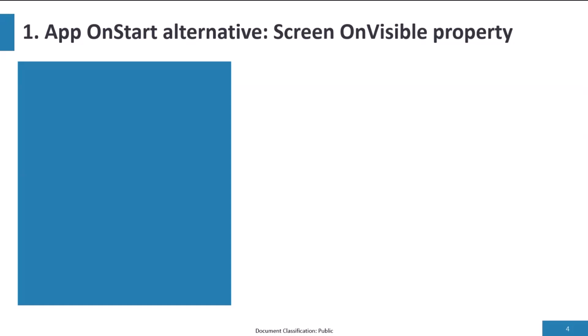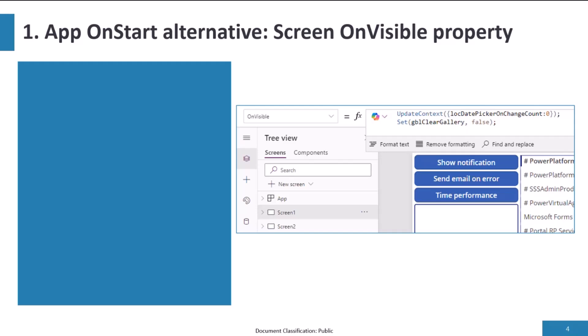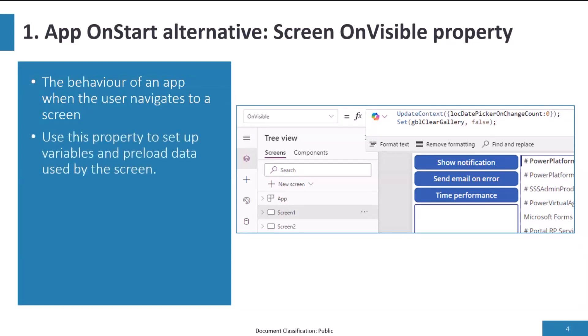Tip one: let's look at App On Start. These are the actions that run when you load an app. If you do too much work there, it might take the app a while to load. An alternative is using the Screen On Visible property. Here I've got Screen One selected on the On Visible property, where we can set variables and preload data — a just-in-time approach where the work is done ad hoc when it's needed.